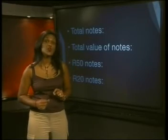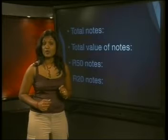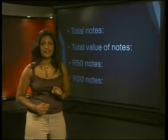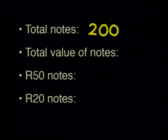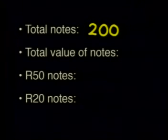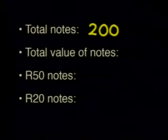Can you work out how many of each type of note she has? Let's first make sure we write down what we know about this problem and what it is we want to find out. The total number of notes is 200.